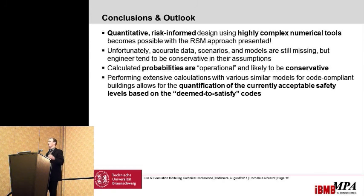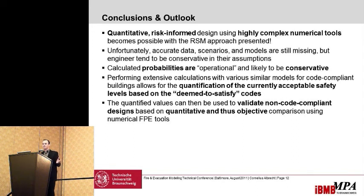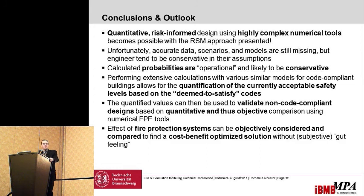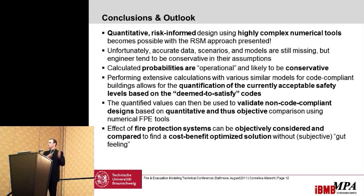If I have those safety levels, I can go back and validate non-code-compliant designs, using the same models and assumptions as for the code-compliant design to determine whether an alternative building meets the same safety level. The effect of fire protection systems within that framework can be objectively considered and compared to find the cost-benefit optimized solution. Instead of going by gut feeling, I can put numbers to it and say this system is better and costs less — that's a great benefit from the probabilistic analysis.